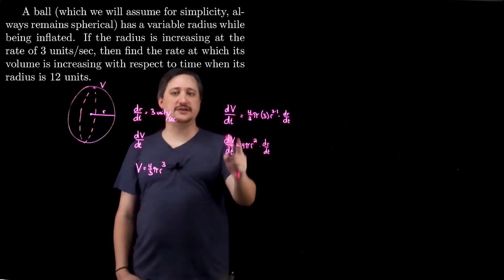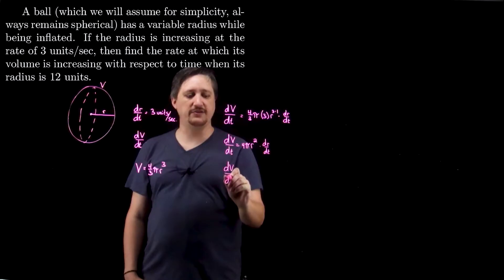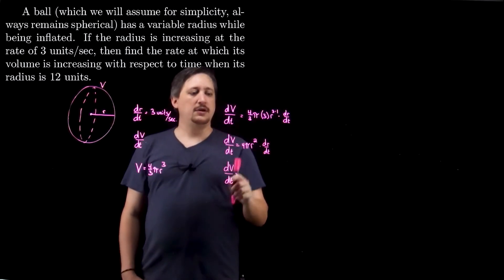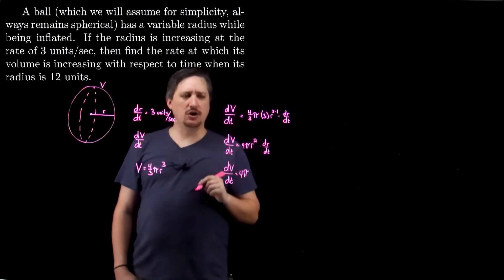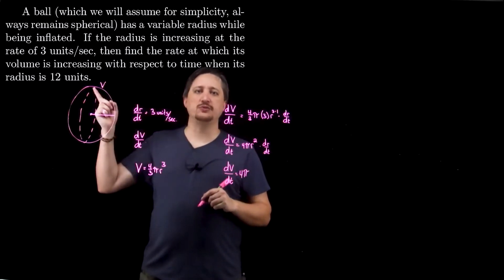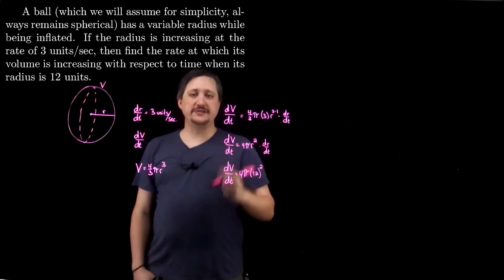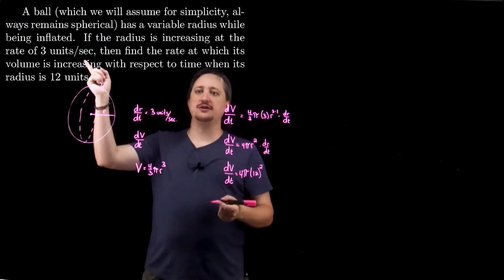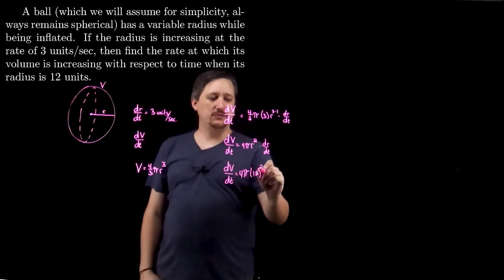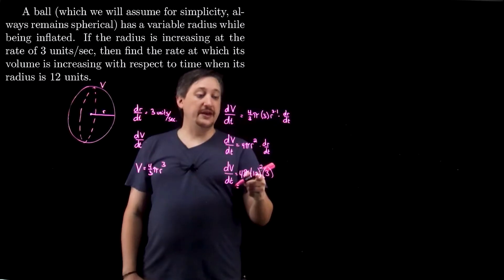Now is when I want to try to plug stuff in. So now I want my dV/dt, this is what I'm trying to get. So my dV/dt is what I'm trying to solve. 4π is just going to stay that. r, do I know r? Well, it did tell me r is 12 units. So I know what r is. That's 12, this is when I'm plugging stuff in. And then dr/dt, do I know that? Well, that's what it was telling me at the beginning, it's increasing at the rate of 3 units per second. So I have 3 units per second.